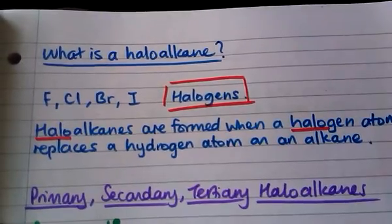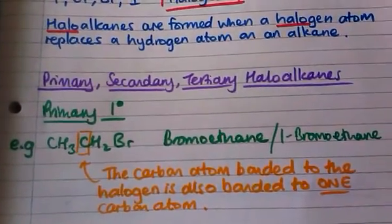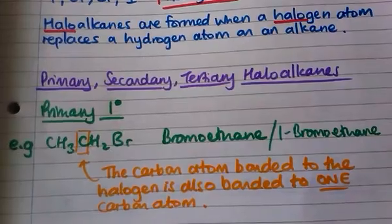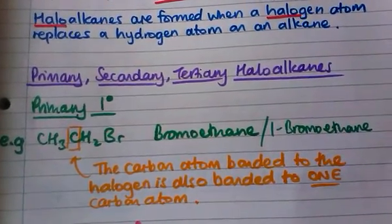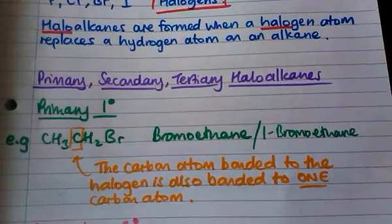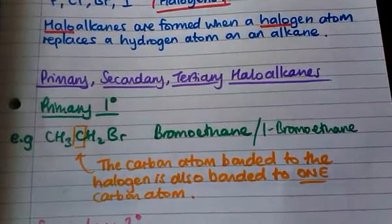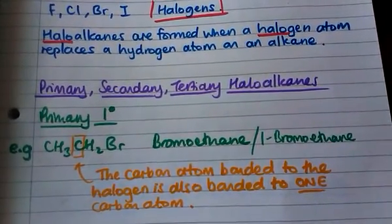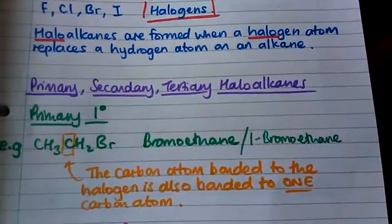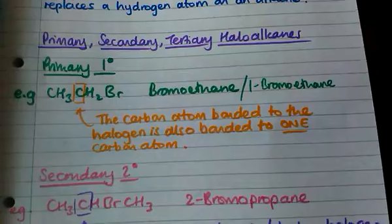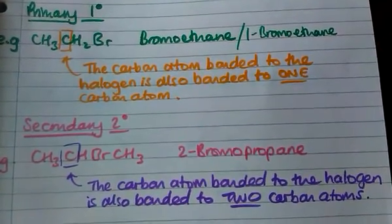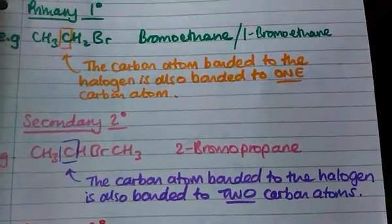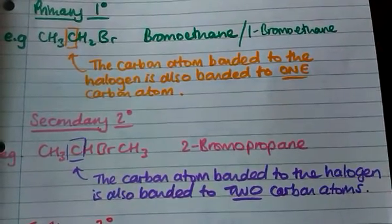Haloalkanes can be either primary, secondary or tertiary. For primary haloalkanes, I'm just going to use bromine as the example for the halogen. In a primary haloalkane, the carbon that is bonded to the halogen is also bonded to one carbon atom. In this example, we've got bromoethane. In a secondary haloalkane, the carbon atom that is bonded to the halogen is also bonded to two carbon atoms. So in this example, we have 2-bromopropane.